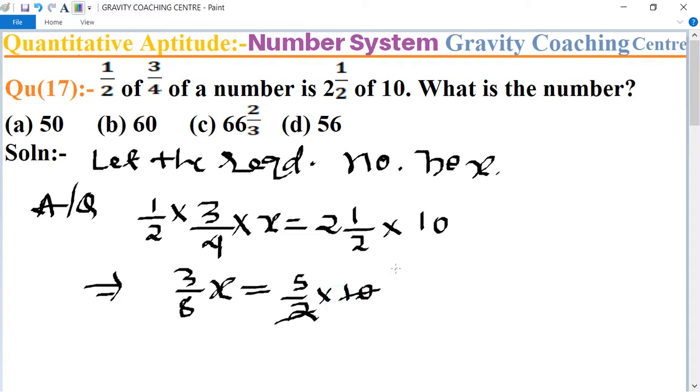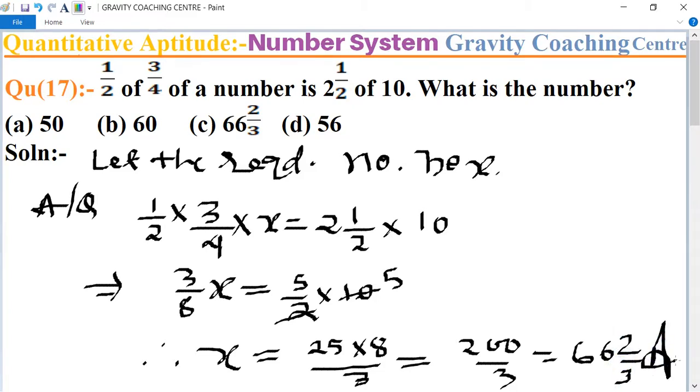Therefore x equals 25 multiplied by 8 over 3, which equals 200 over 3, which equals 66 and two-thirds. This is the required answer, so option C is the correct answer.